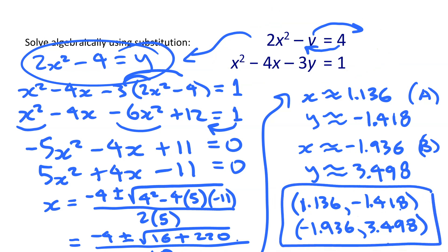That is the method of substitution. The key point is: take whichever equation is simpler to isolate a variable from, and then use that to replace that variable in the other equation.